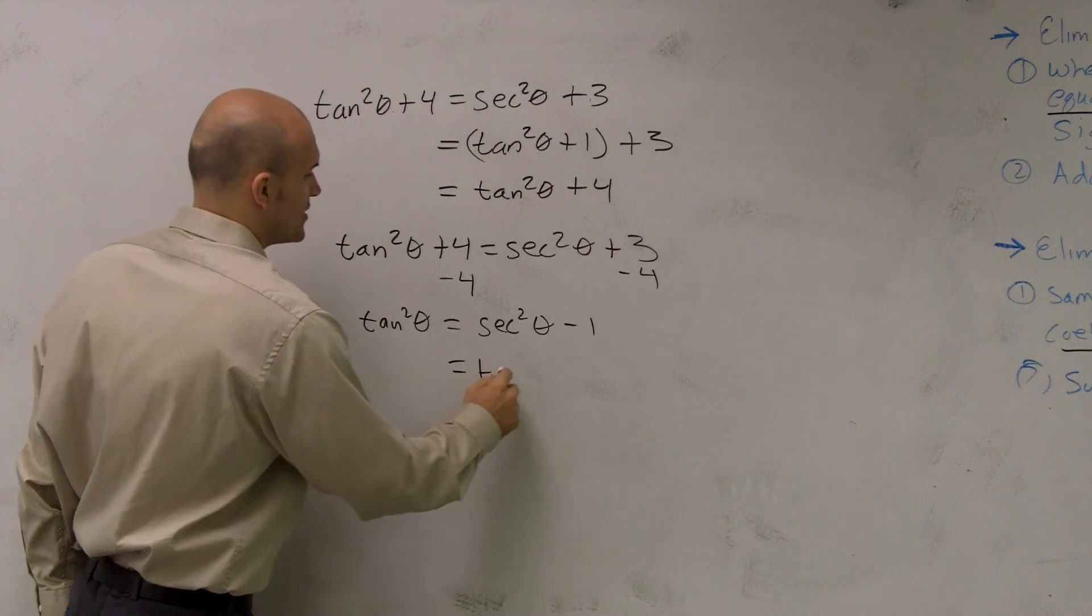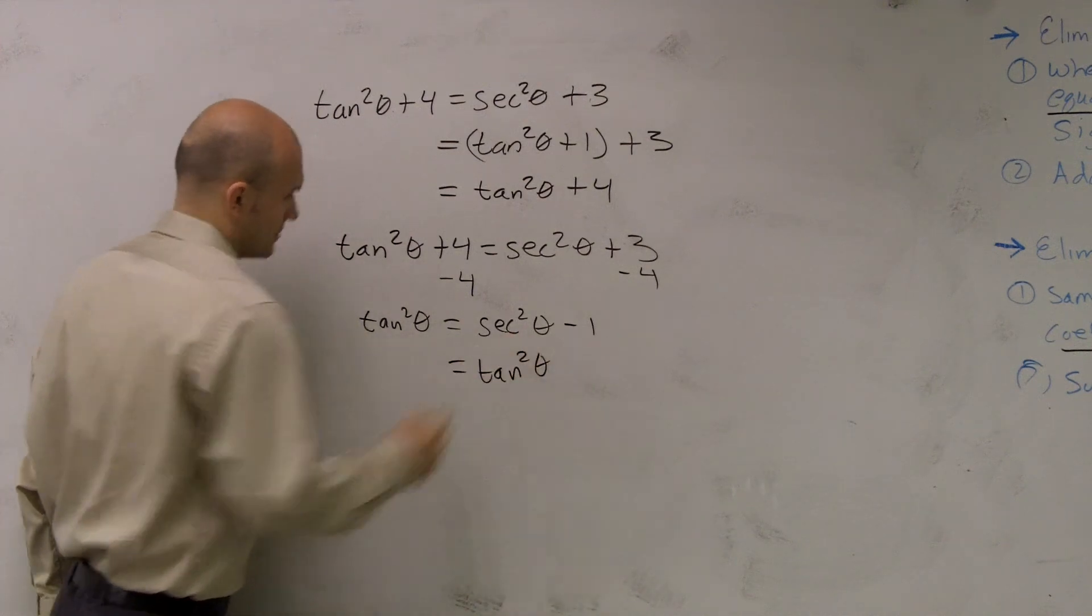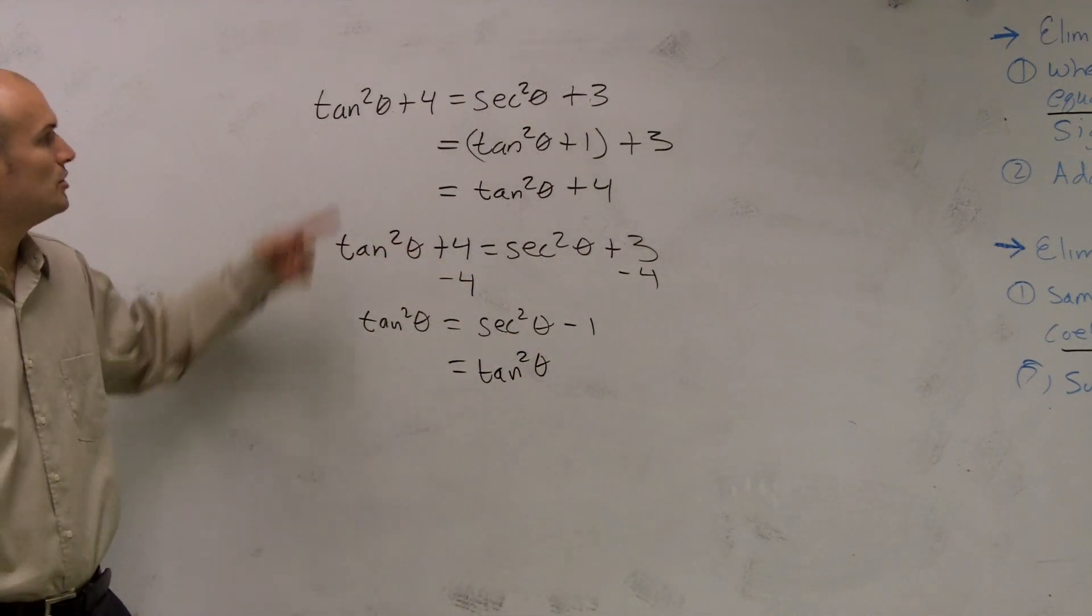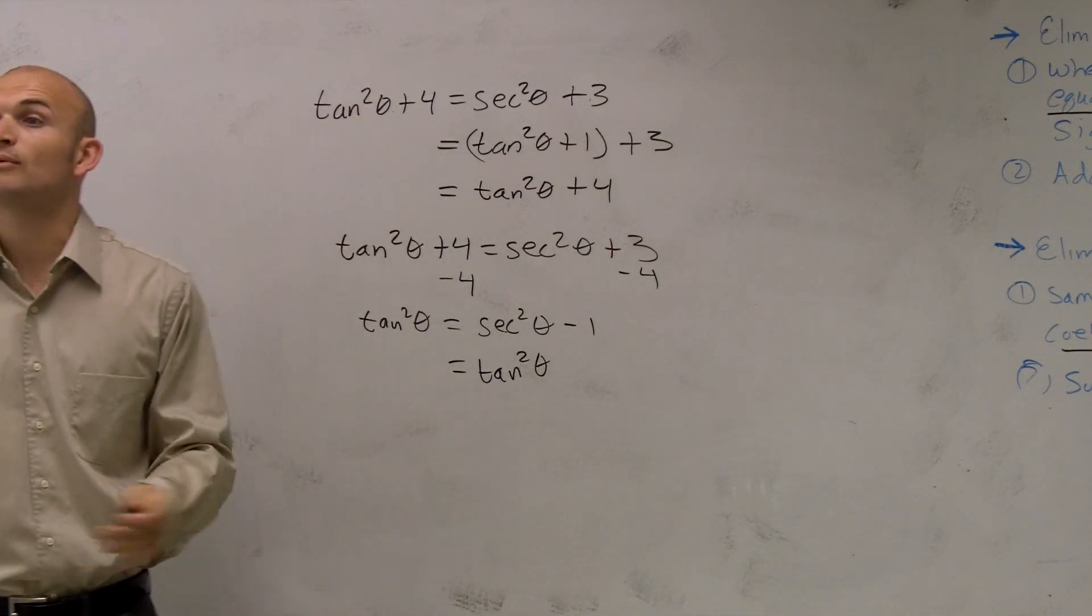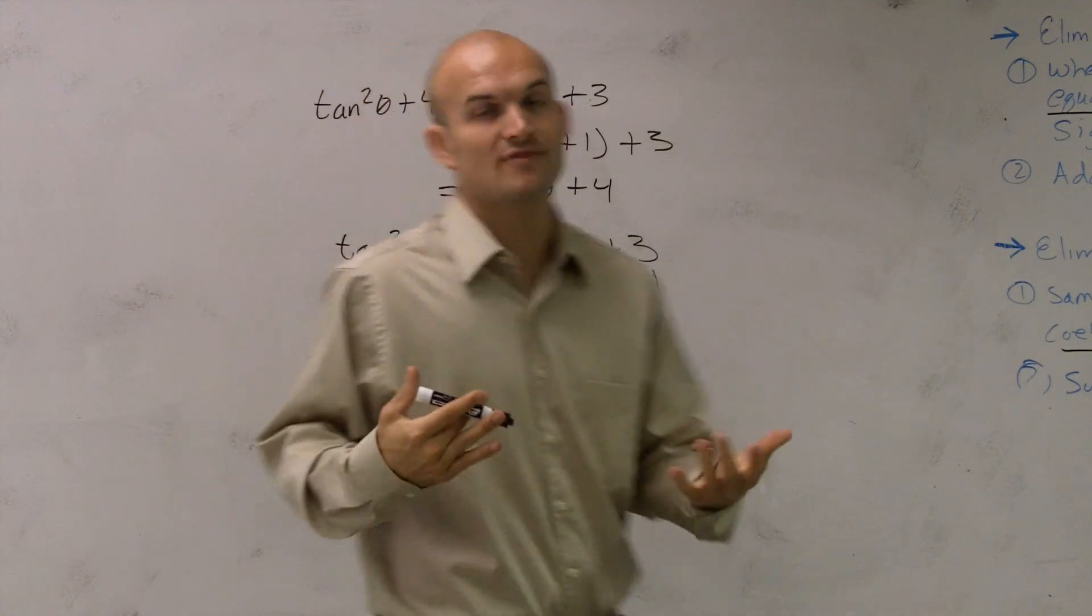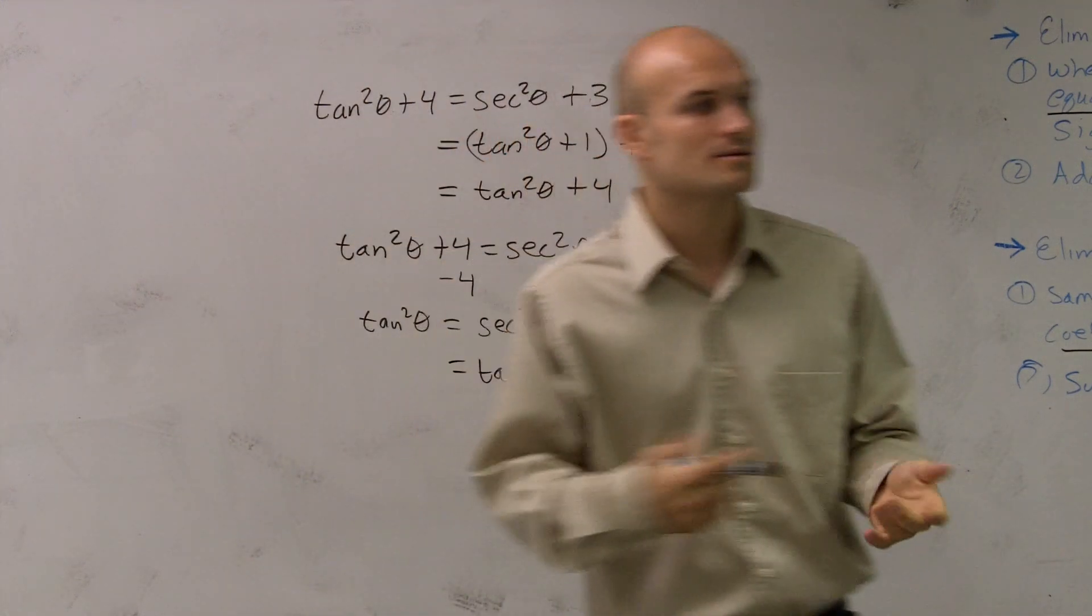In your trig identity, tangent squared. You could have done it the other way, too. You could have done secant. There's multiple ways. The only way you guys are going to understand these and see the vision is just by trying these. Okay?